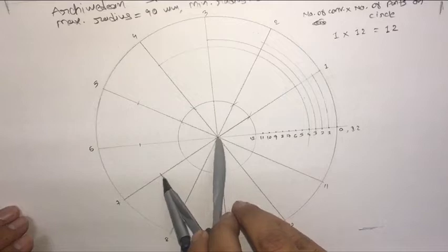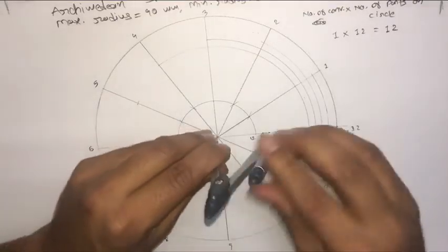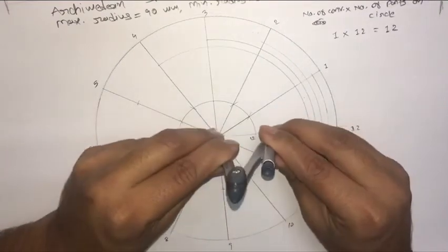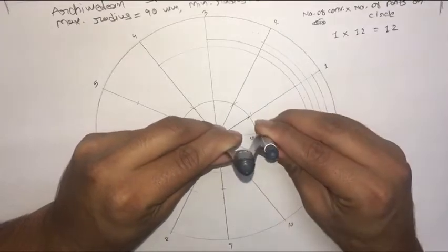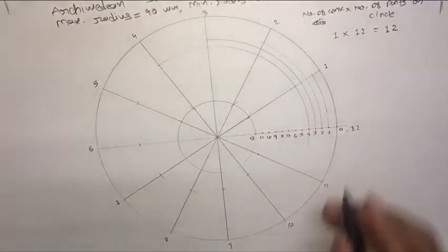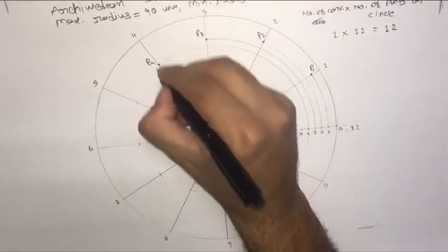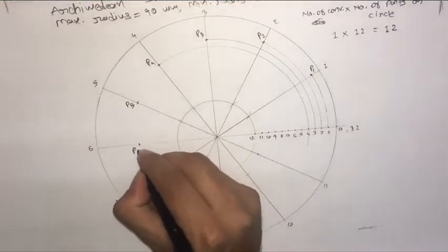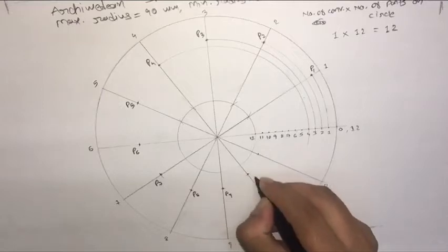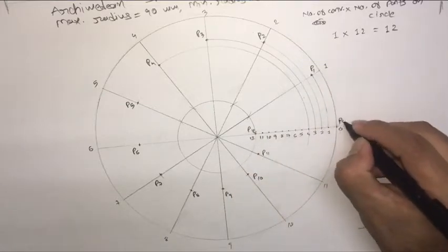Continue marking: 7 to 7, then 8 to 8, then 9, 10 to 10, 11 to 11, and last is 12 — that point itself. Now mark these points as P1, P2, P3, P4, P5, P6, P7, P8. Now connect all these points starting from point P0.